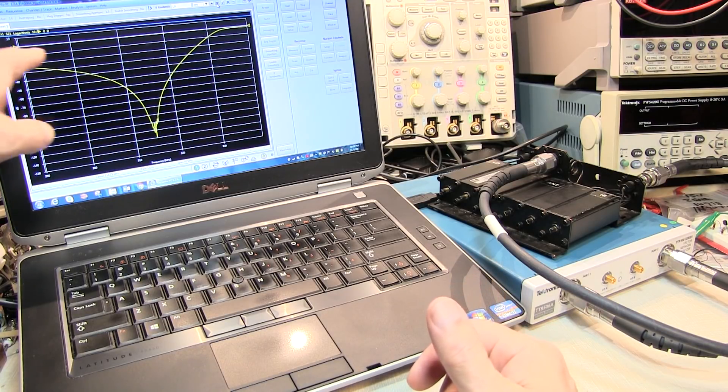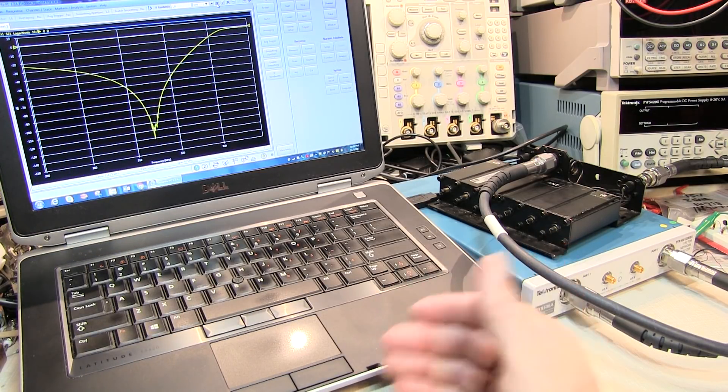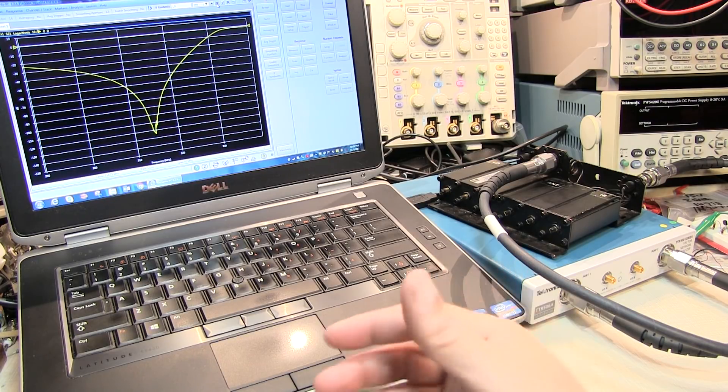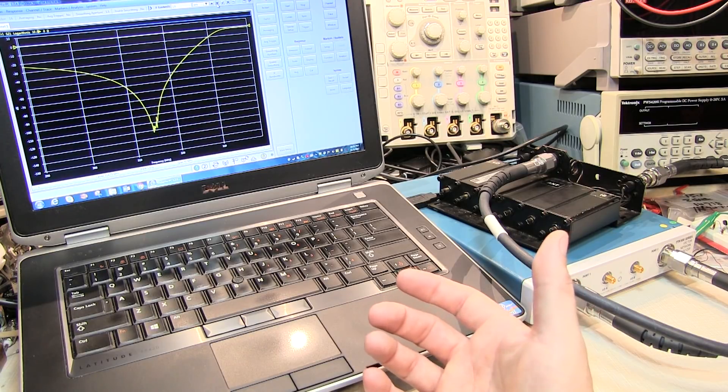And you may want to look at more than just an S21 or through measurement. You may also want to be looking at S11 or return loss for a given path, or maybe both directions simultaneously.